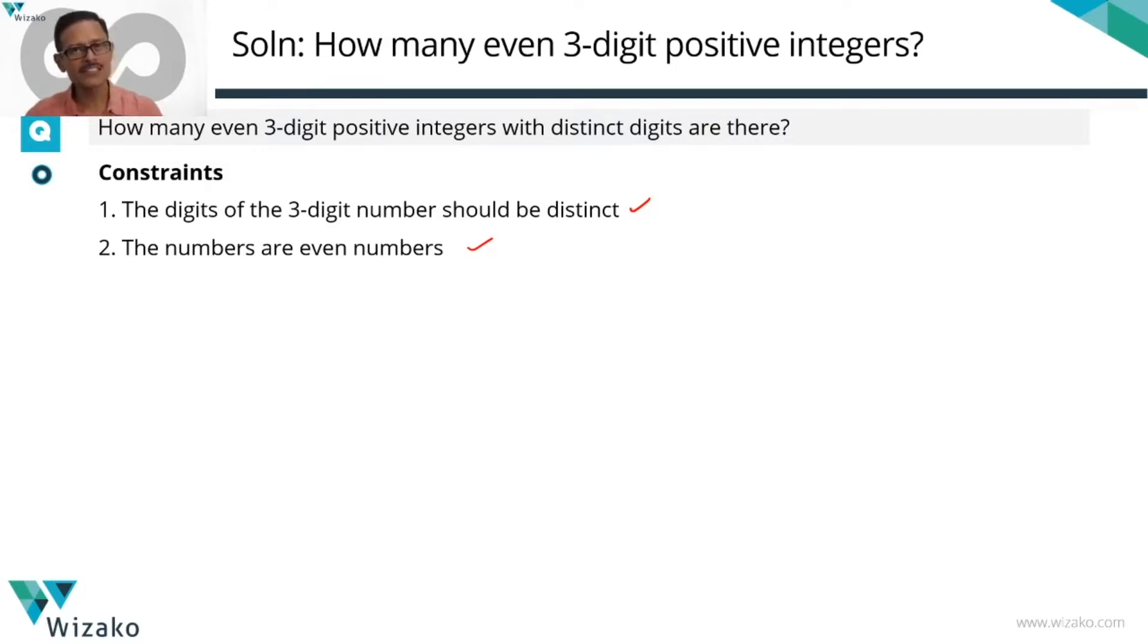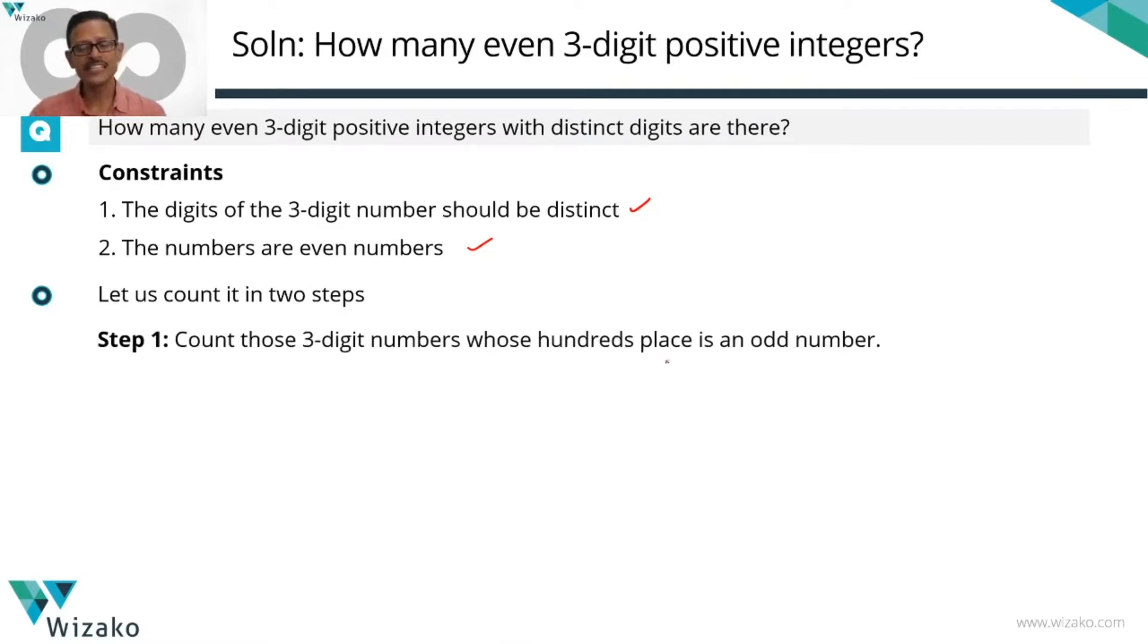The digits should be distinct and the numbers should be even. We'll break this count into two steps. Step one, I'm going to count all those three-digit numbers which are even numbers with distinct digits that have in the hundreds place an odd number. Just give you an example. Numbers like 146 is an example of this. The hundreds place is an odd number, it's an even number, all three digits are distinct. So let's establish three places for this first count. Step one, how many such numbers exist?